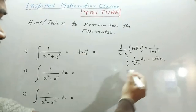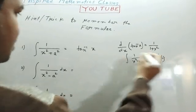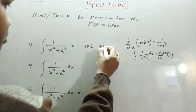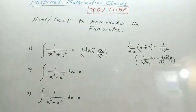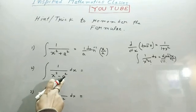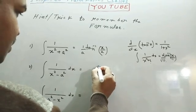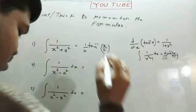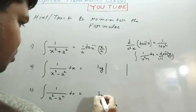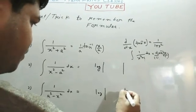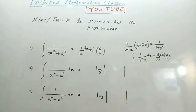Integral 1 upon x square minus a square dx. This is formula. Log of mod. This formula is also log of mod. This formula x square minus a square in denominator. This numerator x minus a and denominator is x plus a, 1 upon 2a. Here 1 upon 2a, you can remember.